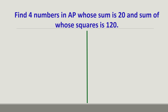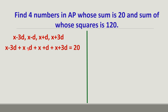Next, find four numbers in AP whose sum is 20 and sum of their squares is 120. When the sum is given, four numbers in AP can be assumed as x − 3d, x − d, x + d, and x + 3d. Sum is 20, so (x − 3d) + (x − d) + (x + d) + (x + 3d) = 20. The ±3d and ±d terms cancel, leaving 4x = 20, so x = 5.